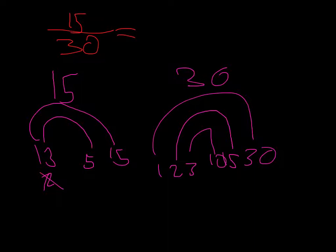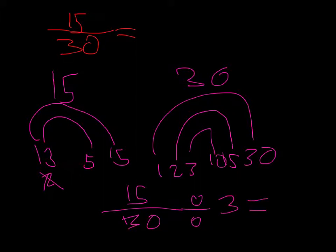So let's divide 15 over 30. Fifteen divided by three is five. And then thirty divided by three is ten.